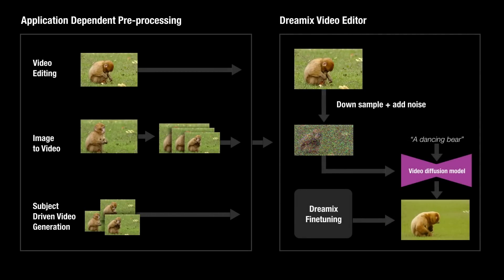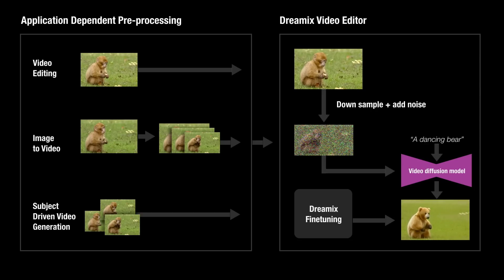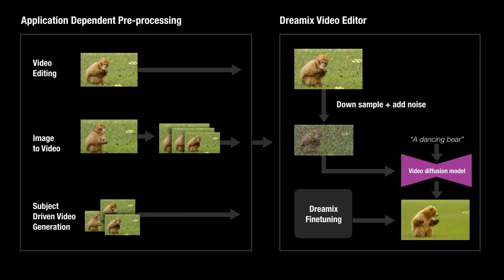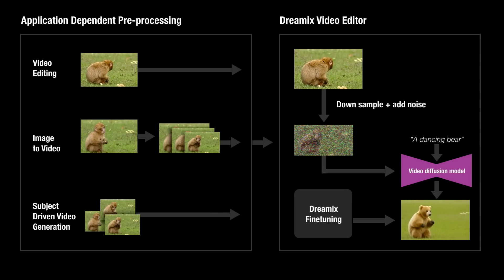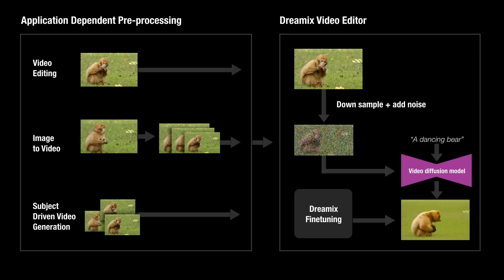To recap, we propose Dreamix, a method for general video editing using text-to-video diffusion models. Our method works by corrupting the initial video, then aligning it with a text prompt using video diffusion models. We present a novel technique for improving fidelity using mixed fine-tuning. Finally, we show that it can be used as a general editing framework for images by first converting the input image into a unified video format and then editing it using our Dreamix editor.